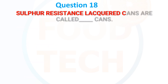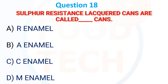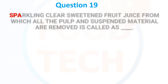Sulfur-resistant lacquer cans are called: A) R-Enamel, B) E-Enamel, C) C-Enamel, D) Plain Enamel. The answer is C) C-Enamel. Sparkling clear sweetened fruit juice from which all pulp and suspended material are removed is called as squash or clear juice.